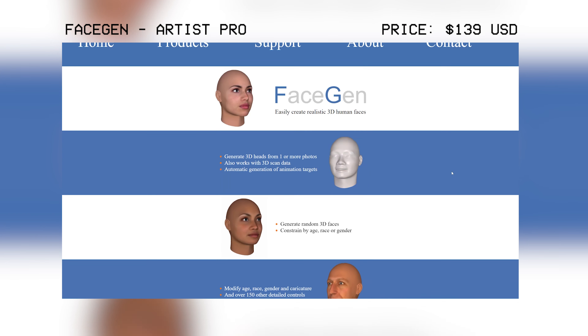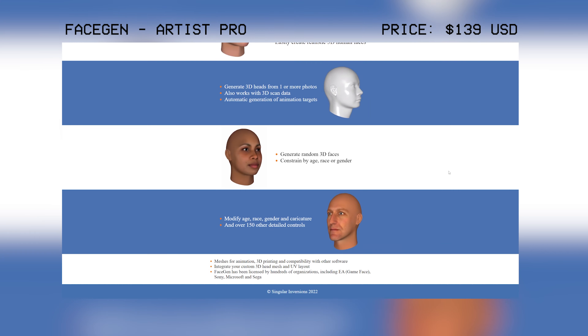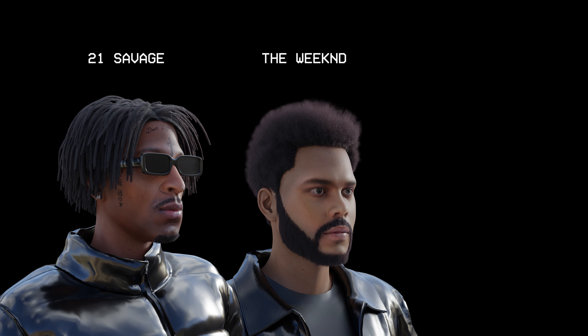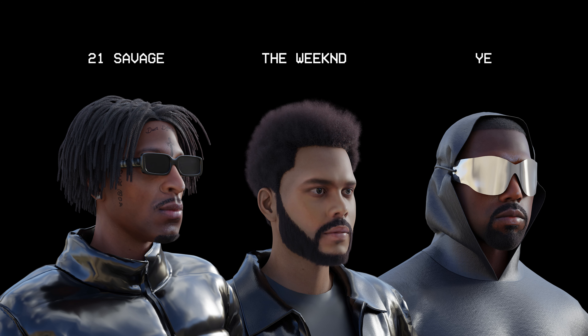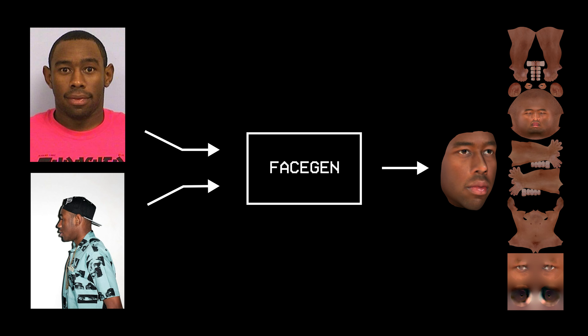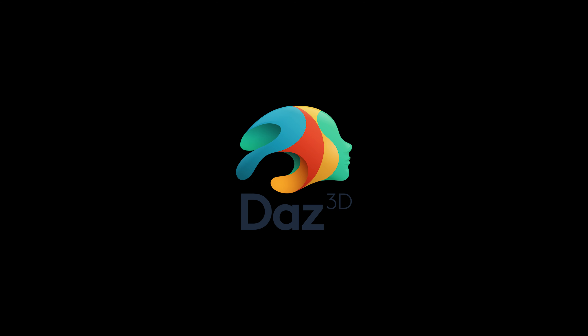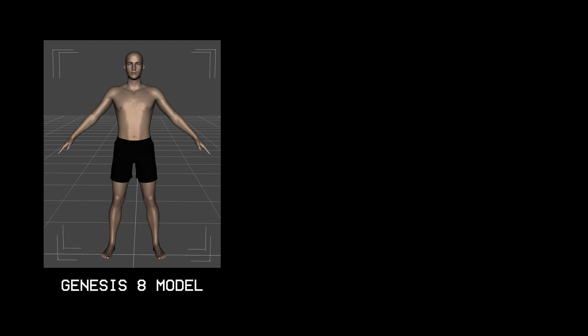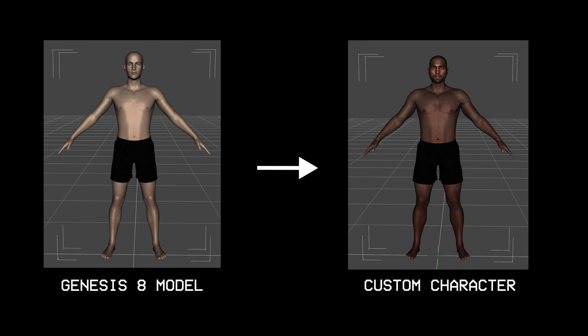To start off we'll be using FaceGen. FaceGen allows us to create custom characters based on photos. All we need is two photos, one from the front and one from the side, and then FaceGen will generate a face morph and a set of textures for us that we can use in DAZ Studio to turn the basic Genesis 8 model into our character.